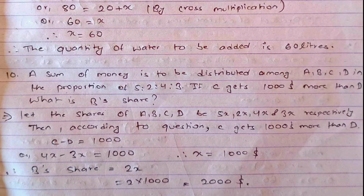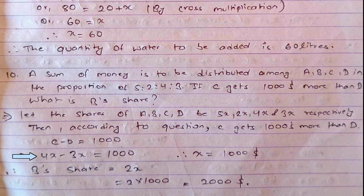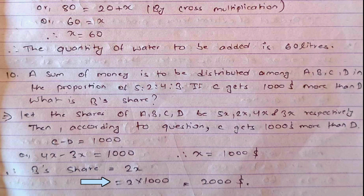Question 10: A sum of money is to be distributed among A, B, C, and D in the proportion 5 : 2 : 4 : 3. If C gets $1000 more than D, what is B's share? We assume the amounts for A, B, C, D are 5x, 2x, 4x, and 3x. Since C − D = 1000, we get 4x − 3x = 1000, so x = $1000. Therefore B's share = 2x = 2 × 1000 = $2000.